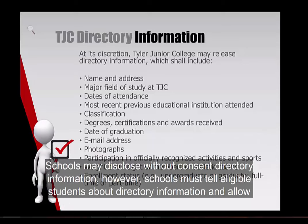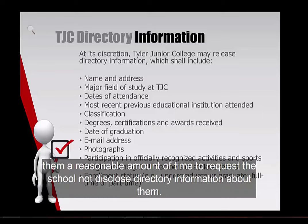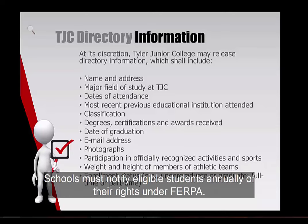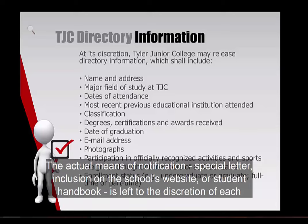Schools may disclose without consent directory information. However, schools must tell eligible students about directory information and allow them a reasonable amount of time to request that the school not disclose directory information about them. Schools must notify eligible students annually of their rights under FERPA. The actual means of notification — special letter, inclusion on the school's website, or a student handbook — is left to the discretion of each school.